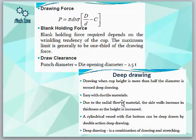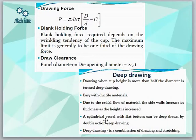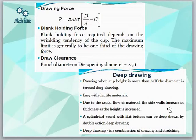Next is deep drawing. Drawing is termed deep drawing when the cup height is more than half the diameter, that is when H is greater than D/2. Deep drawing is easier with ductile materials because they undergo plastic deformation. Brittle materials will simply fracture or fail since there is no yielding. Due to the radial flow of material, the side walls increase in thickness as height increases.